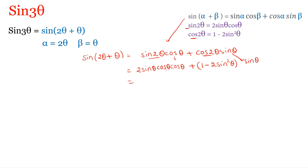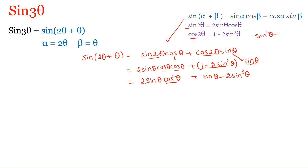In the first term, cos θ × cos θ gives cos²θ. From the second term, 1 × sin θ is sin θ, and −2 sin²θ × sin θ gives −2 sin³θ. Now, cos²θ can be substituted using the identity sin²θ + cos²θ = 1.